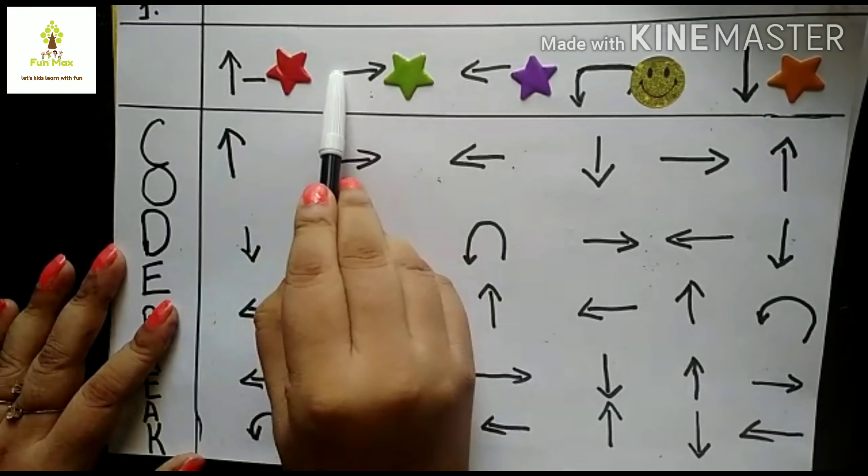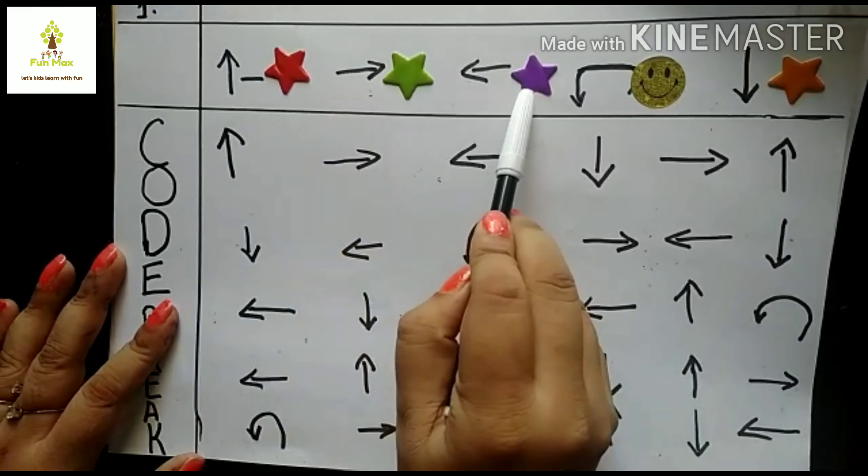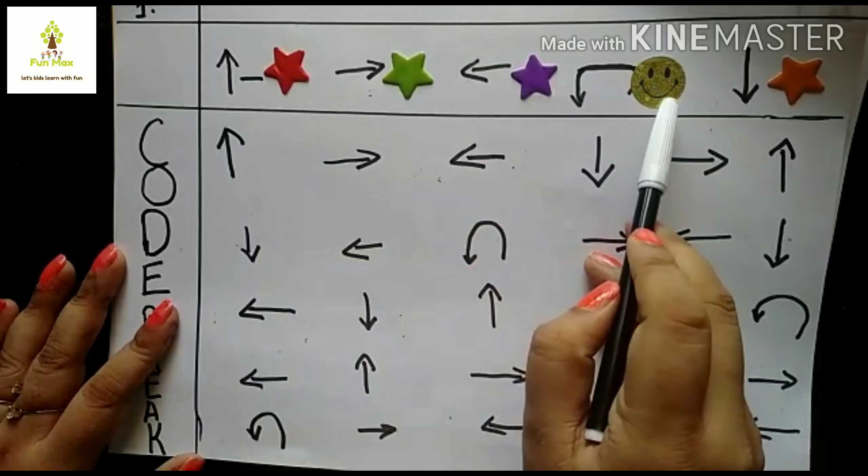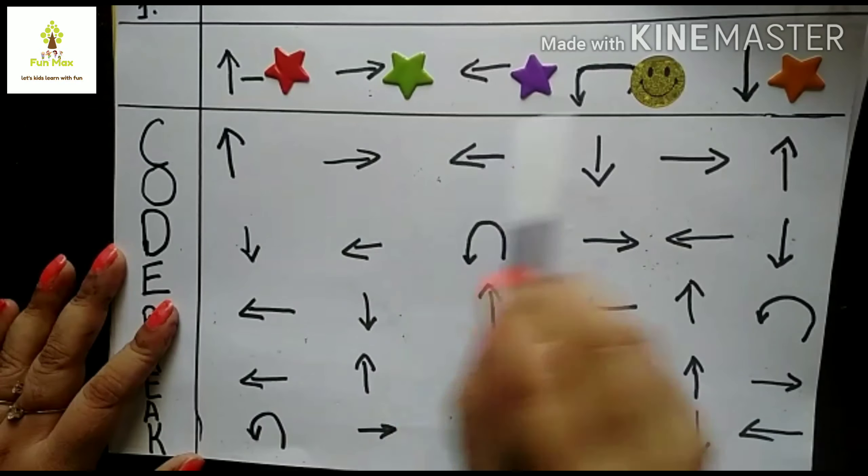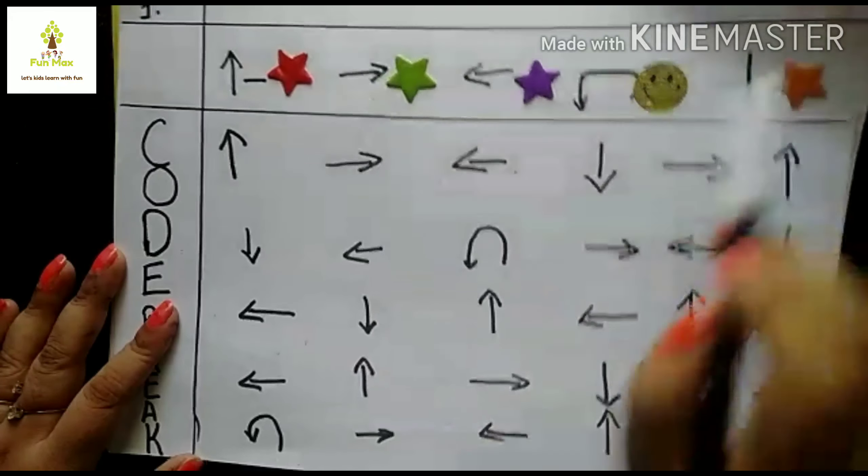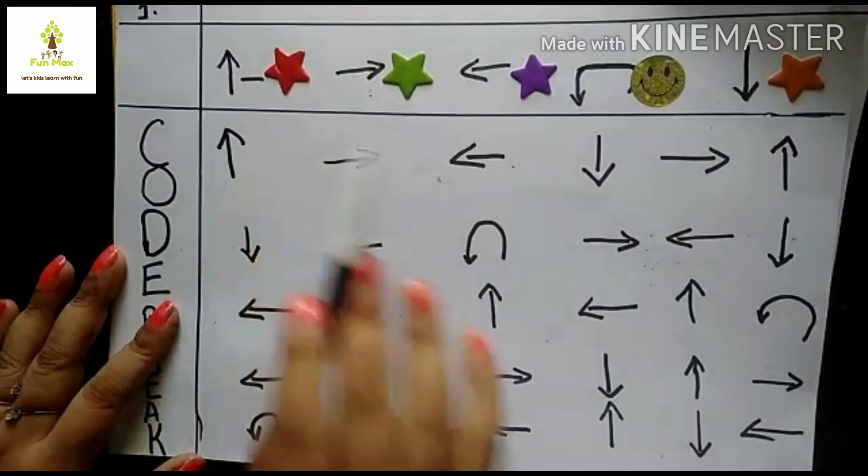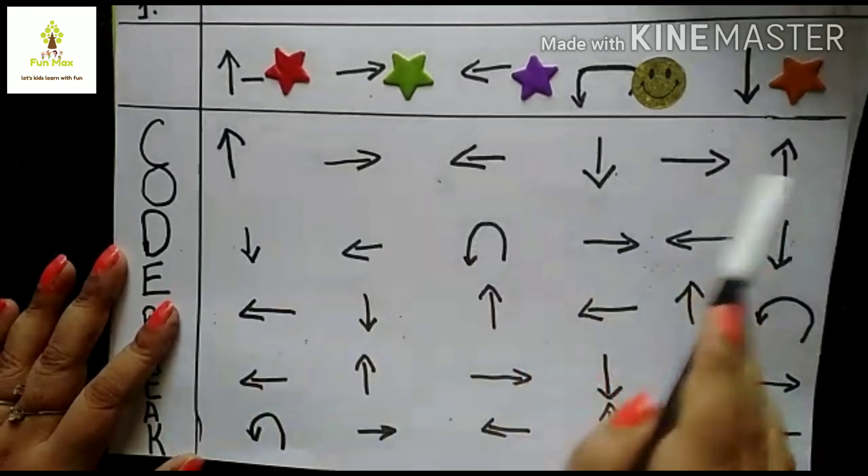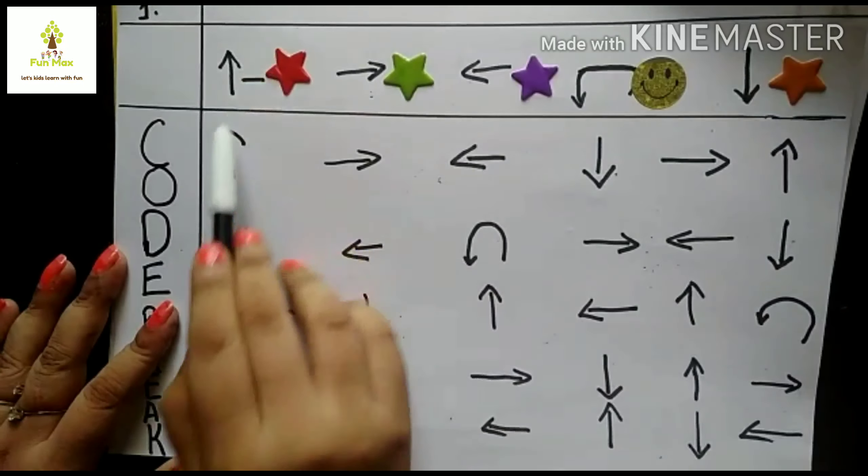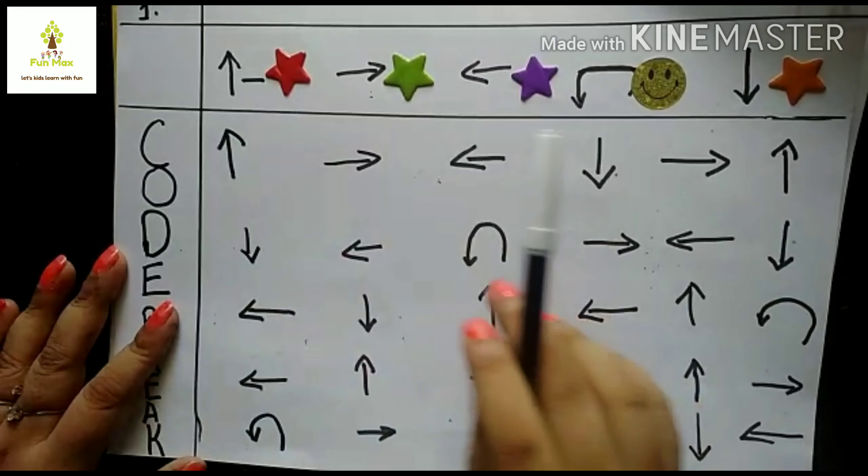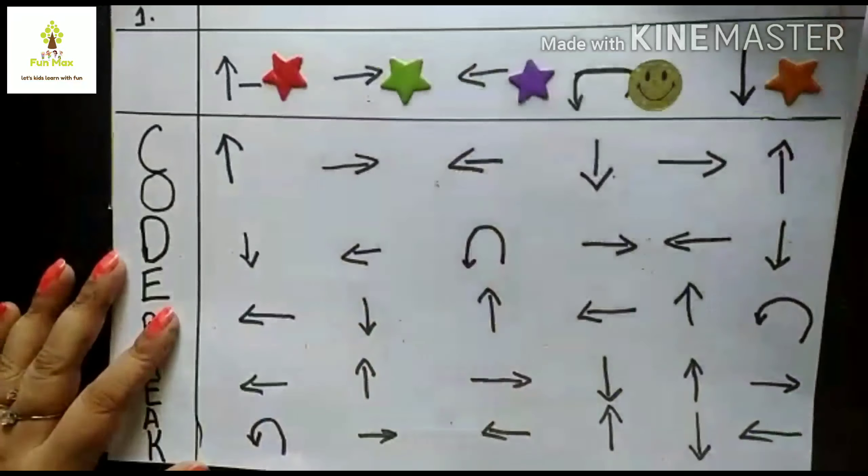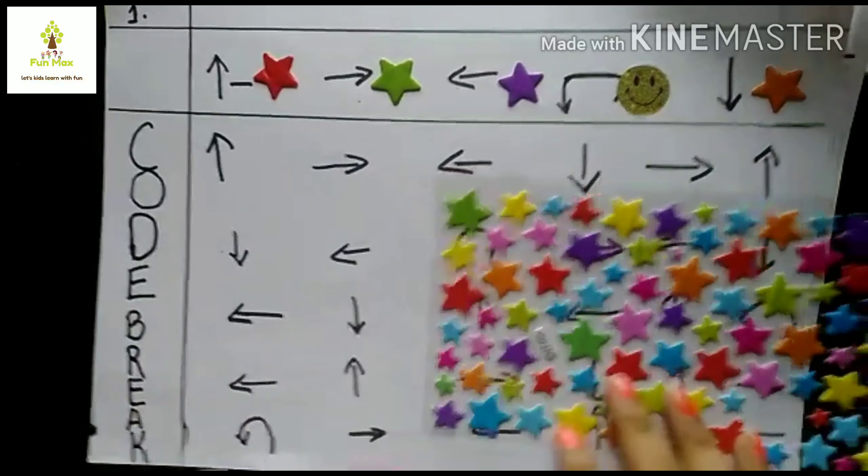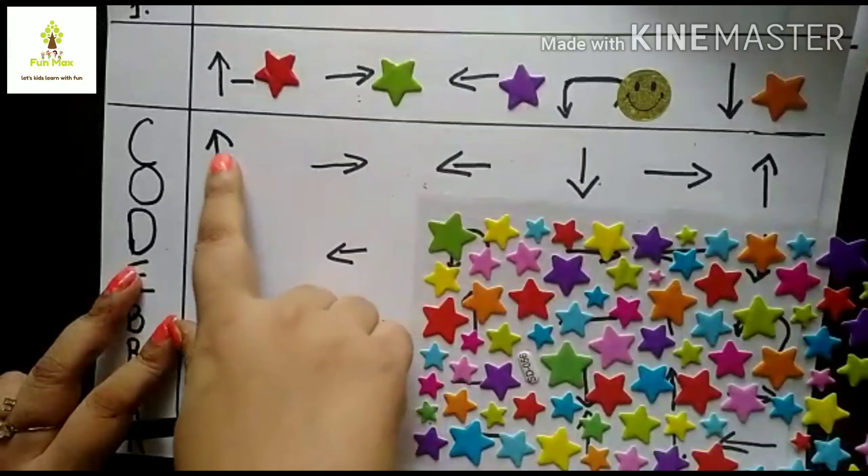Red star is right arrow, green star is right arrow, left arrow is purple, U-turn is smiley, and down arrow is orange. So when you do this coding, you can see arrows here. According to the child, the star will be put. The child will also feel fun to do this. And this is also the coding activity.